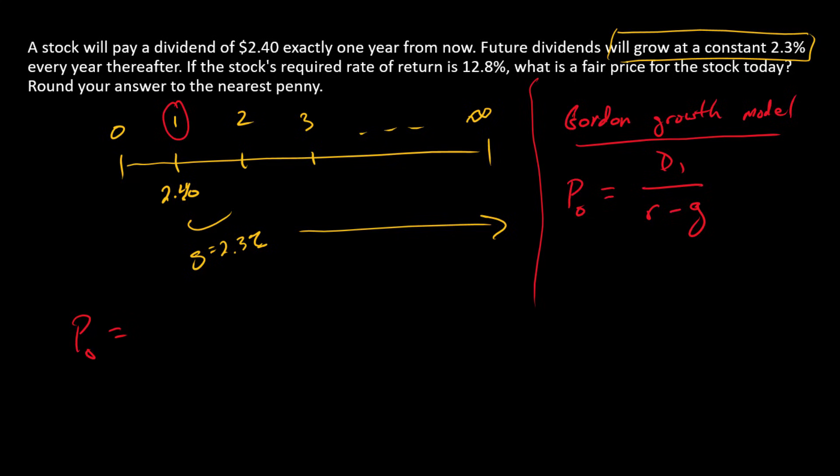The stock price is going to be $2.40 in the numerator divided by 0.128 minus the growth rate of 0.023. That's $22.86, and there it is.